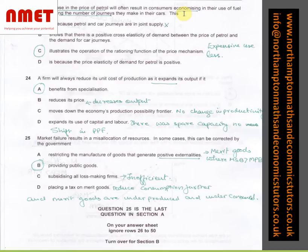In question number 24, a firm will always reduce its unit cost of production as it expands its output if it benefits from specialization. What I've done is I've also used process of elimination, and I've said B will not work. If it reduces its price, decreases output from demand and supply curves. Moves down the economy's PPF, no change in productivity. Expands its use of capital and labor, I've said there was spare capacity, no shift in PPF.